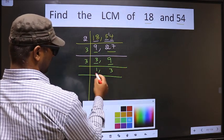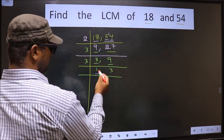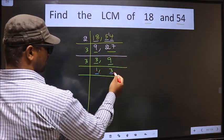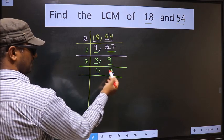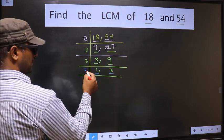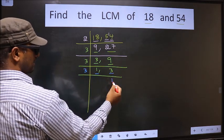We got 1 here, so focus on the other number, that is 3. 3 is a prime number, so 3 ones 3.